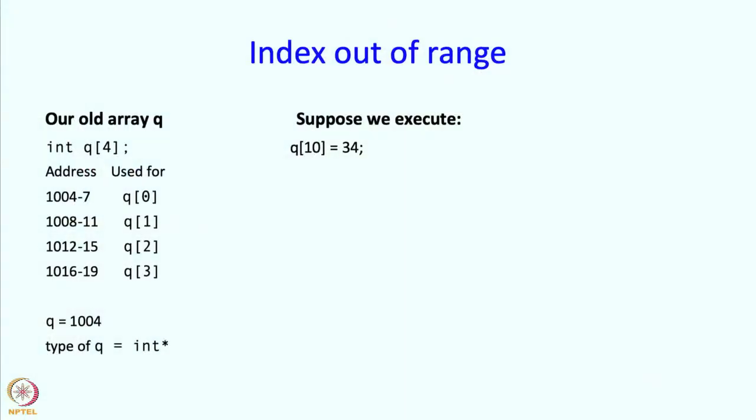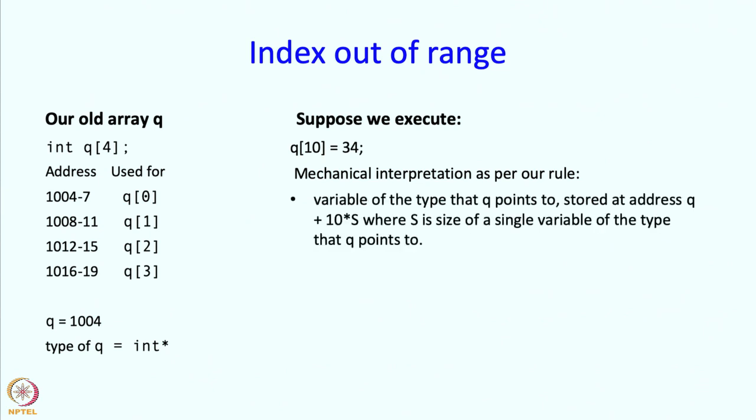Now, in light of this discussion of how aname of index works, let us try to see what index out of range means. Here is our old array q, and suppose we execute q of 10 equals 34. So what would this do? If we mechanically interpret as per our rule, it is the variable of type that q points to, stored at address q plus 10 times s, where s is the size of a single variable of the type that q points to. This is a mouthful but we know how to interpret it now.